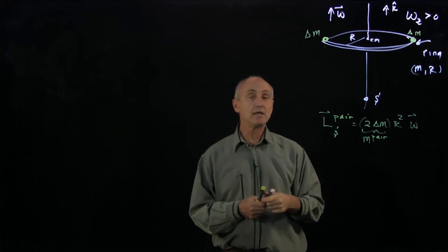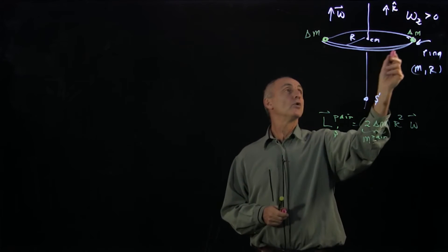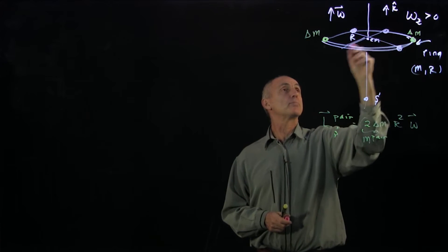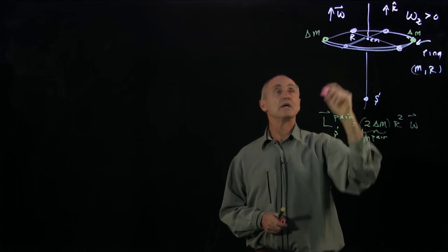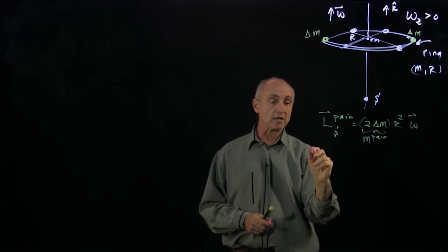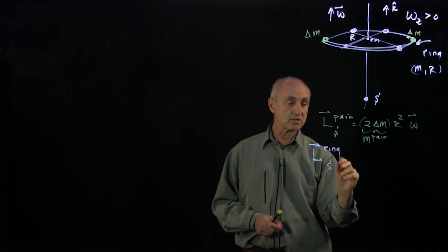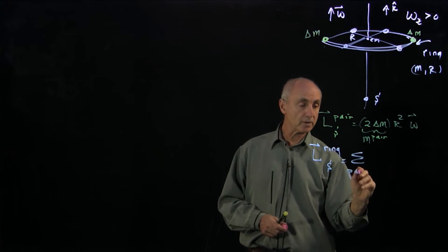And so to get the angular momentum of the ring, we'll just sum up a set of symmetric pairs until we expand out over the entire ring. And so L of the ring about s is just the sum over the pairs